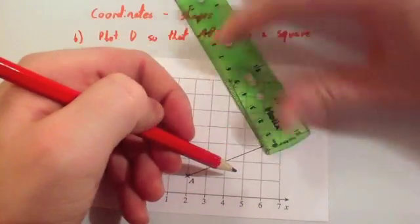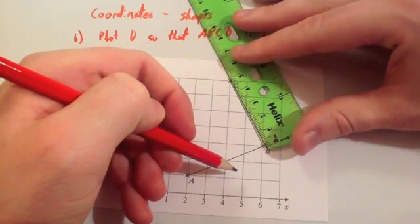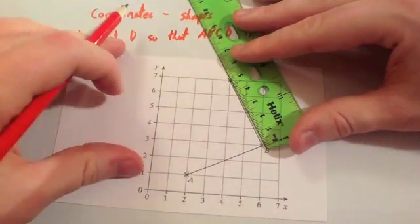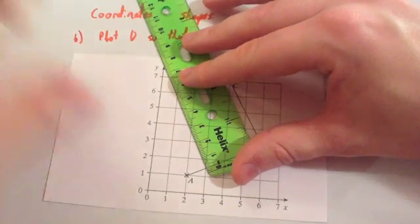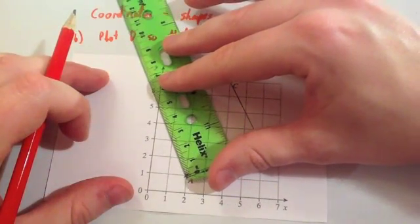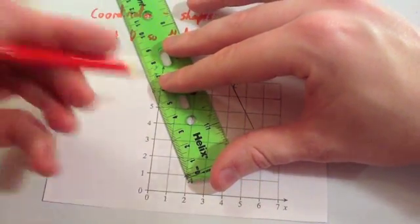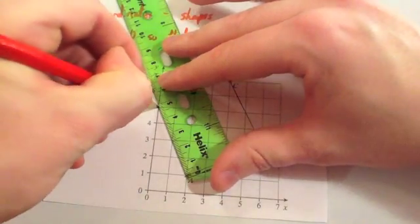So it's going to have to be this length. So it's going to have to be just under five centimeters. And it's going to have to be parallel. So if we move our ruler across to here, you can see that it's roughly going to be here, zero, five, okay, which would be the coordinate there.